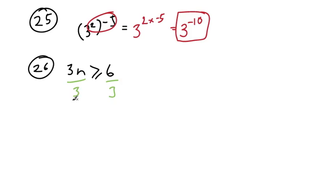Now, it's not a negative number, so we don't have to change anything about this inequality sign. The 3s cancel out. We're left with the n. This is greater than or equal to 2.